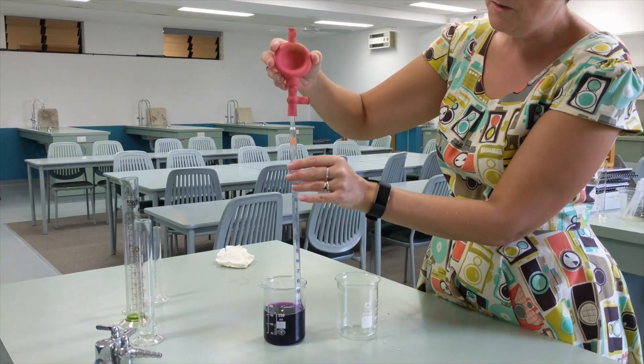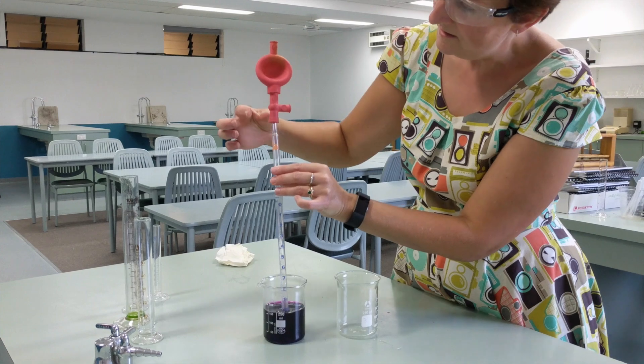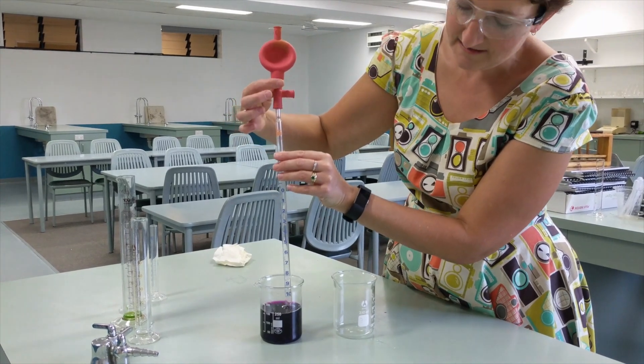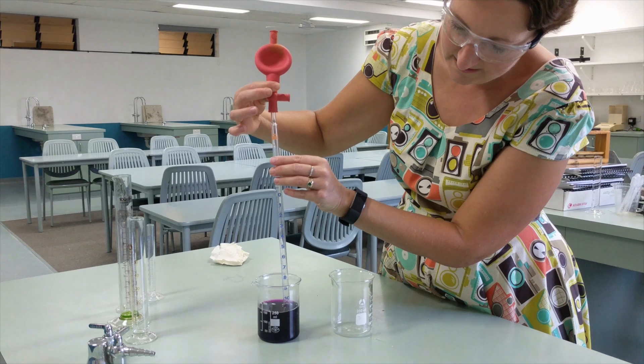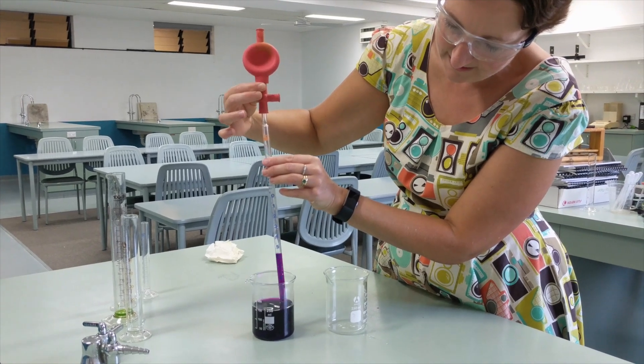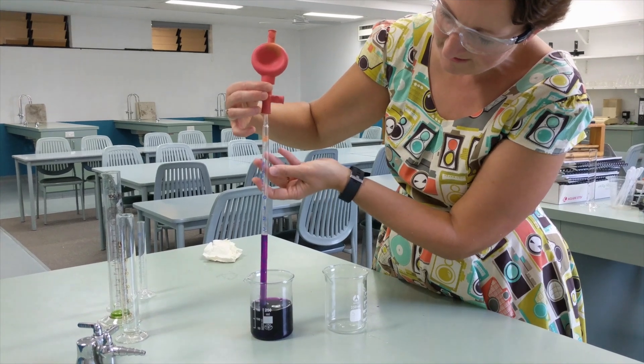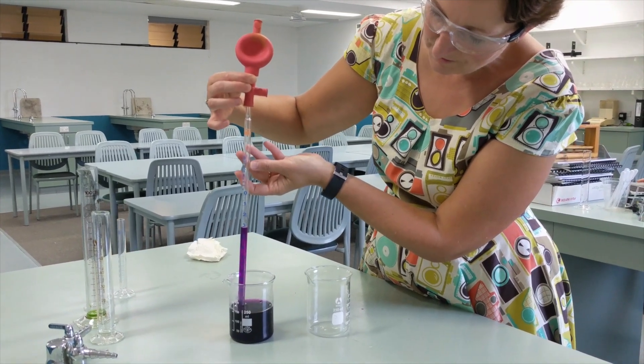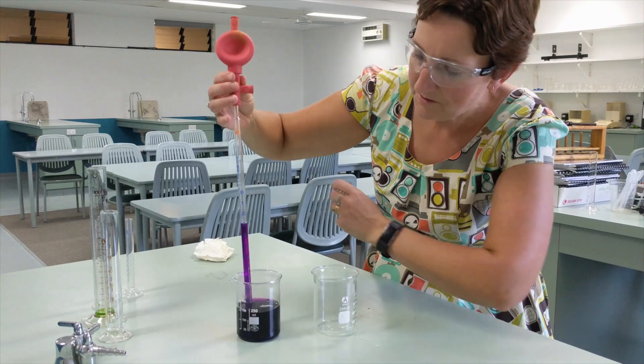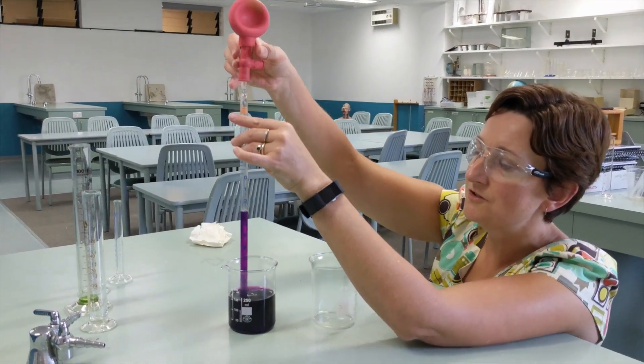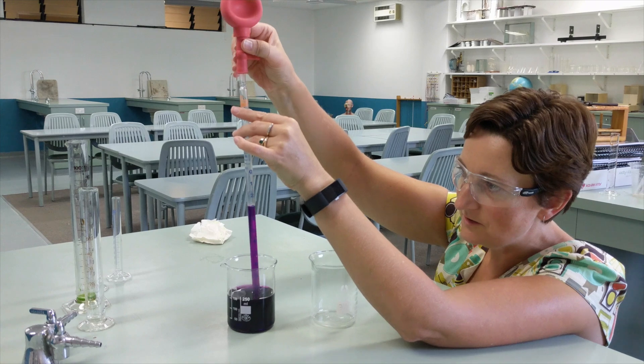What we then do is hold the pipette and squeeze the S. S stands for suck. You can squeeze it quite hard and it will suck up really fast, or you can squeeze it more gently and it will suck up more slowly. Again, you want to get down to eye level to make sure you're sucking up an accurate volume.